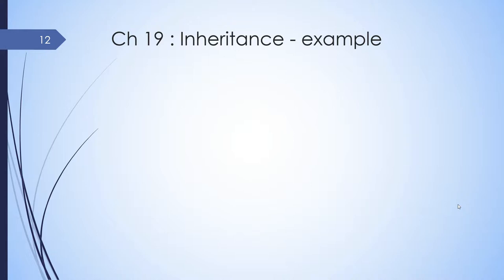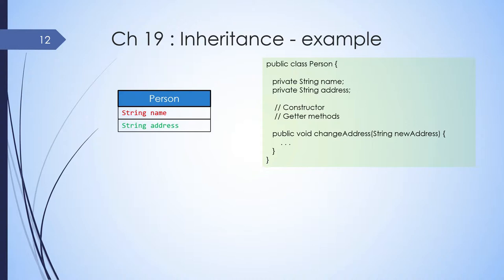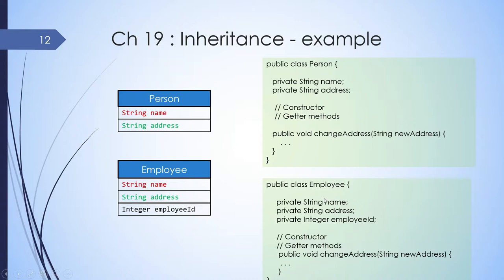Consider we have a requirement to create two classes: class Person, which has name, address, and getter methods, also a set address. And class Employee, which has name, address, employee ID, getter methods, and a set address. Here is how our Person class is going to look like. For creating the Employee class, there are two approaches: either create it from scratch, which will lead to replication of code from Person, or approach two — somehow reuse all the members of Person in the Employee class. With approach one, all the fields defined in Person are replicated in Employee.